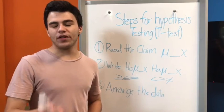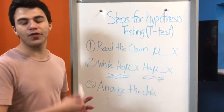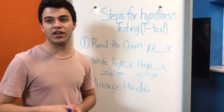The steps for hypothesis testing, especially for the t-test, are the following. The first step is to read the claim. You have to state if the average is either greater than or less than x, or equal or not equal to.